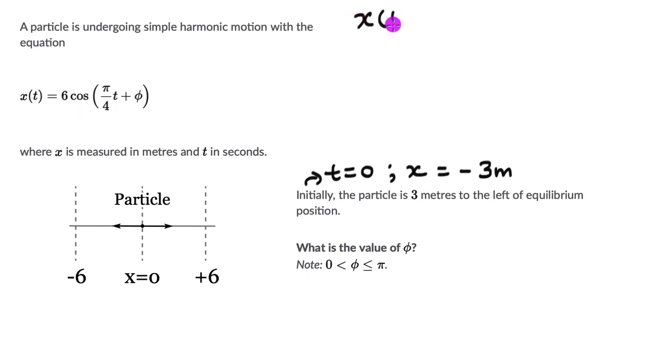We have x(t) = 6 cos(πt/4 + φ). So when t is 0, x is -3, so this becomes -3 = 6 cos(φ), since t is 0. Now this gives us cos(φ) = -1/2.